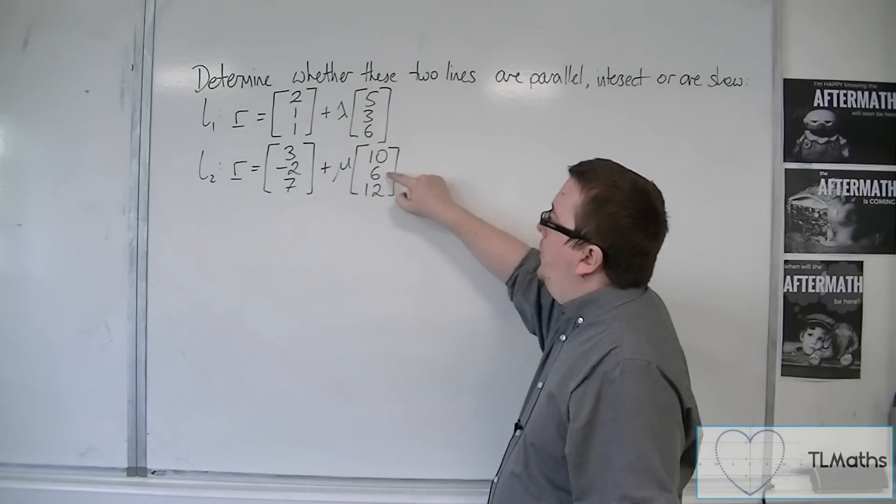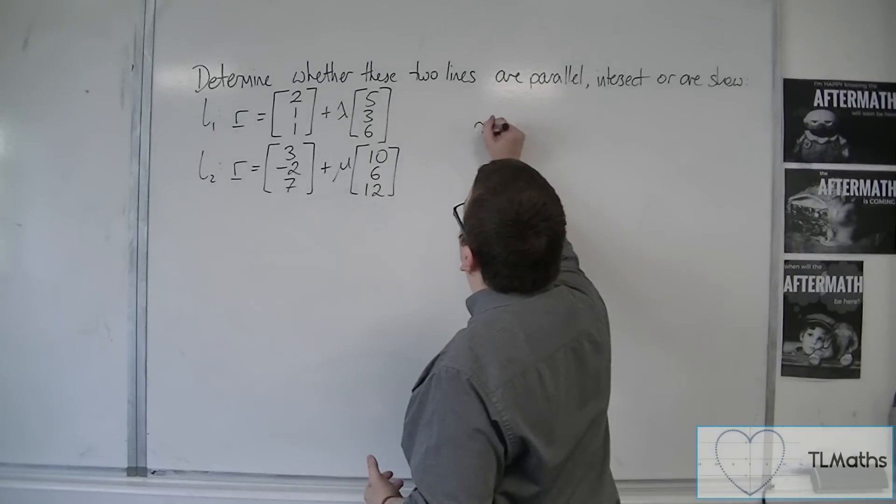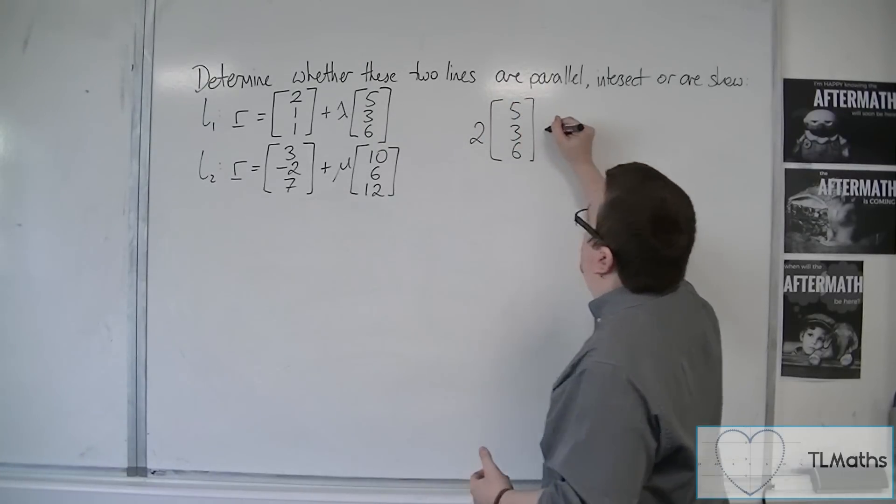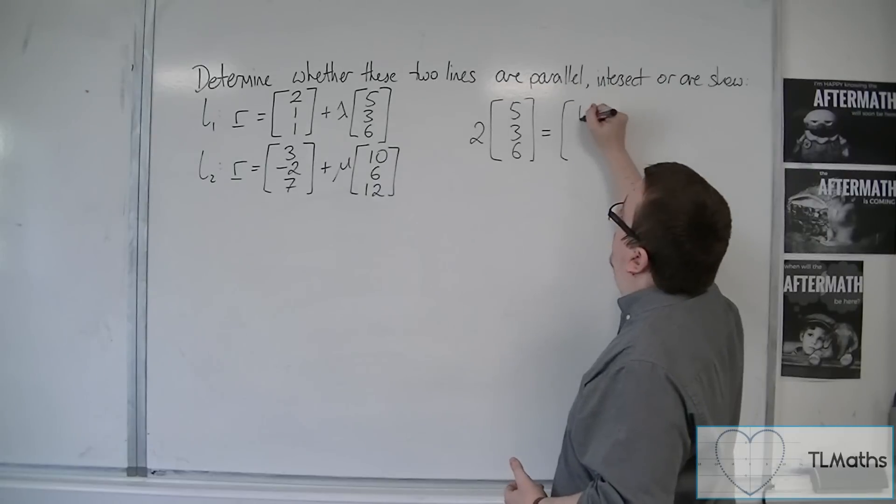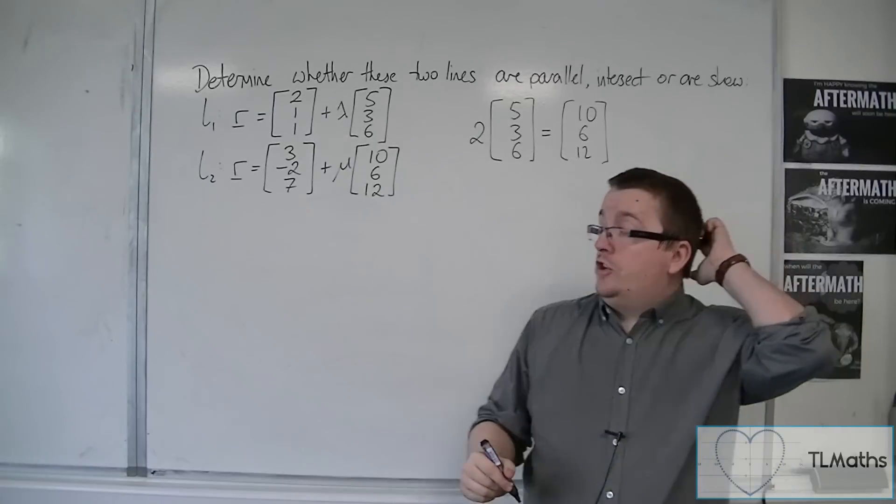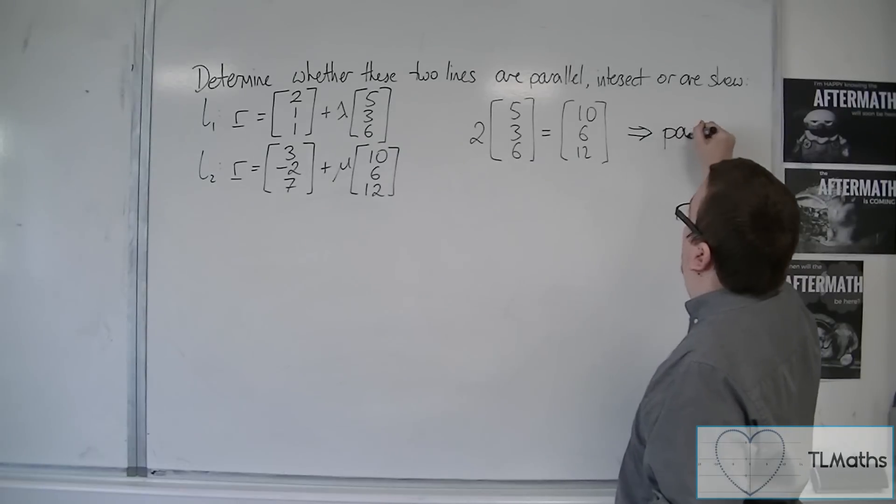Now, they're not precisely the same, but in actual fact, one is a multiple of the other. Because two lots of line one's direction vector is the same as line two's direction vector. And so they are parallel.